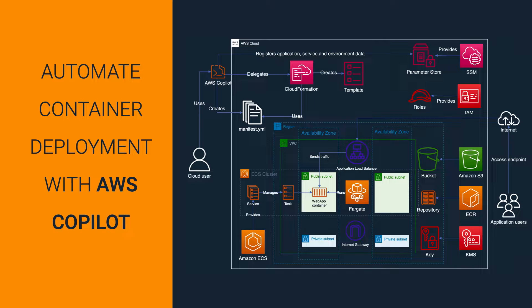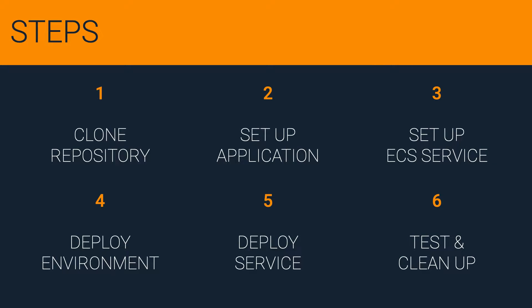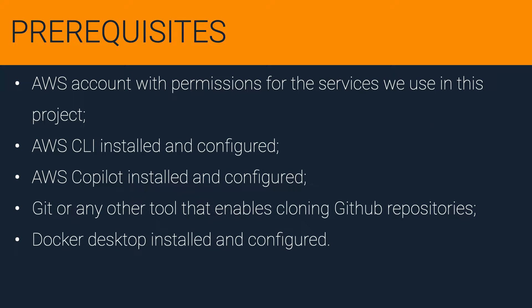This project uses AWS Copilot for automating a containerized web application deployment on Amazon ECS. We are going to build this architecture step by step. Our project consists of six steps. To implement the project in this video, please ensure the following prerequisites.